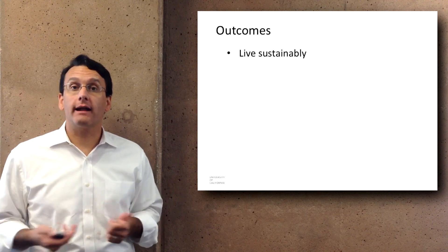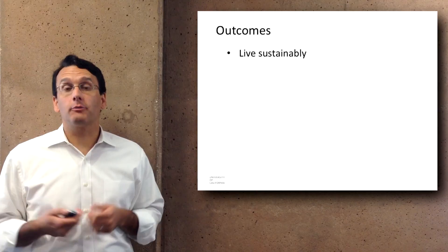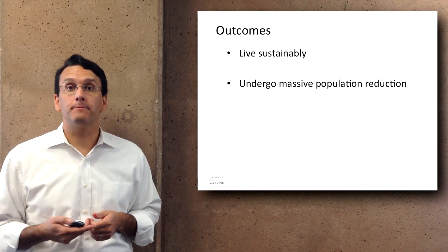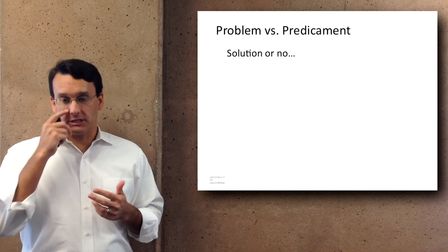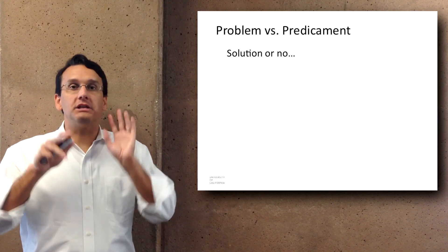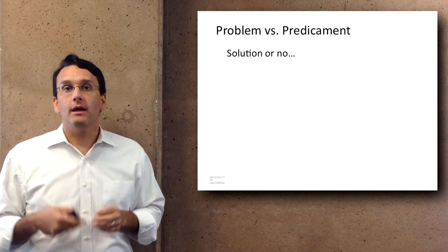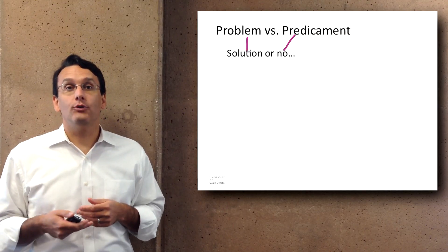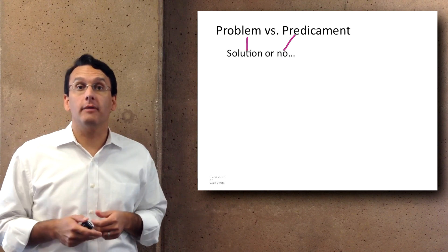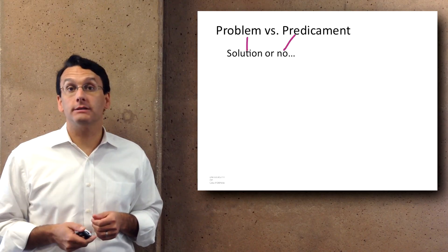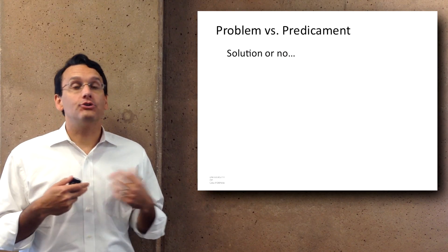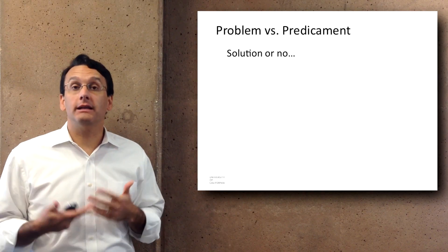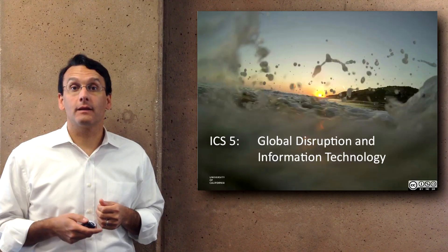These factors lead to a variety of possible outcomes: over the next several hundred years we can figure out how to live sustainably, or we may undergo massive population reduction and the suffering that would accompany that if we don't. There is a distinction made by John Michael Greer between a problem — something to which there is a solution — and a predicament — something to which there is not. Greer suggests we don't have environmental problems; we have environmental predicaments, things that are not solvable. It's not 100% clear that sustainability is achievable by humans in a relevant amount of time.